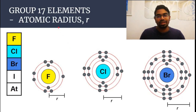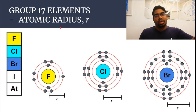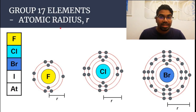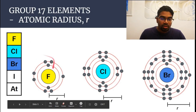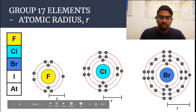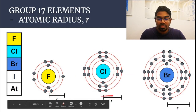All properties rely on atomic radius, so it's important to look at the atomic radius trend. As with all other groups, as we go down the group, the period number increases and therefore the number of shells increases too, so the atom becomes bigger and bigger. From fluorine to chlorine: fluorine has two shells, chlorine has three shells, bromine has four shells — the atomic radius, the size of the atom, is becoming bigger and bigger.